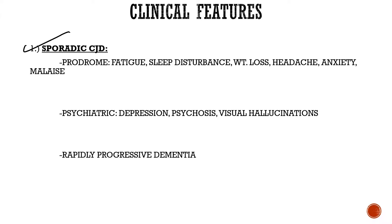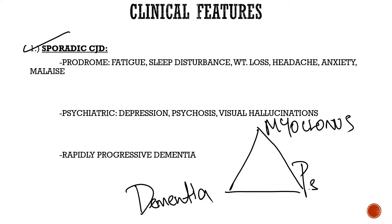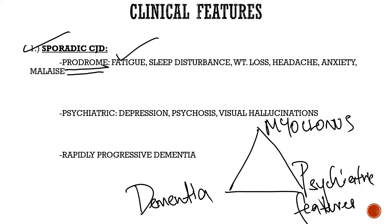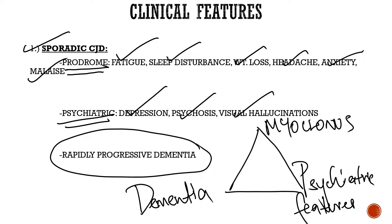The clinical features of sporadic CJD: three key features to remember are rapidly progressive dementia, myoclonus, and a psychiatric syndrome including depression and hallucinations. Before these develop, there are prodromal symptoms of fatigue, sleep disturbance, weight loss, headache, anxiety, and malaise. The patient then develops severe depression, psychosis, visual hallucinations, and rapidly progressive dementia.